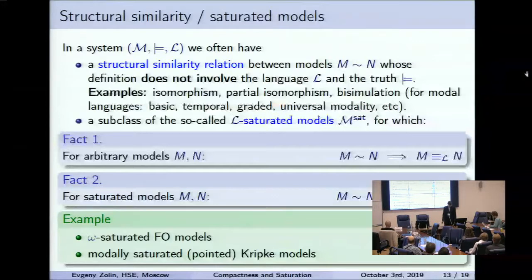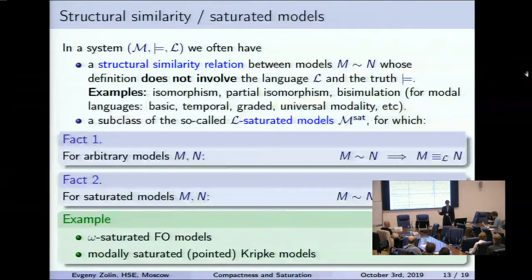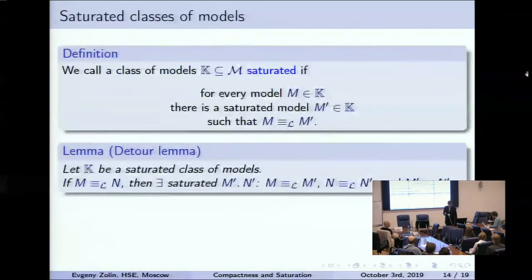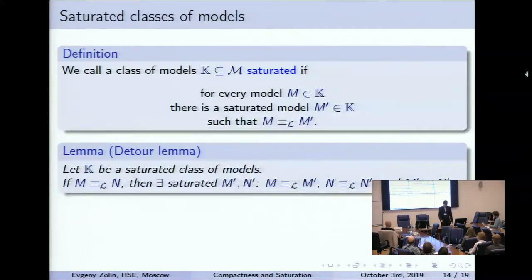There are variations of this notion for other modal languages — tense language, graded modal languages, and so on. Now we introduce the notion of a saturated class of models. A class K is L-saturated — because the notion depends on the language L — if every model is equivalent to some saturated model from this class.